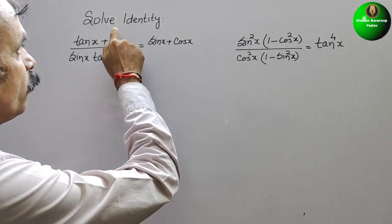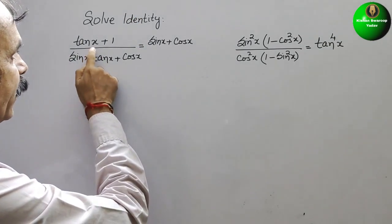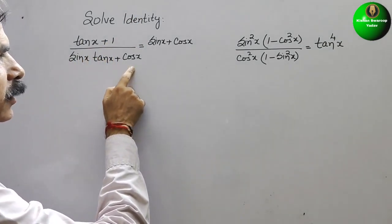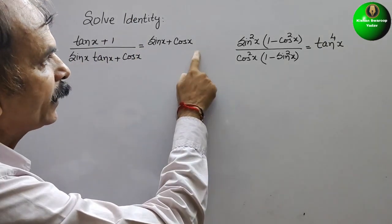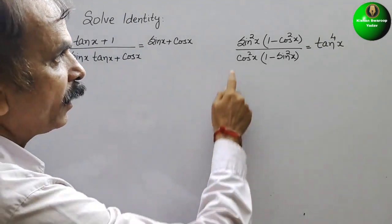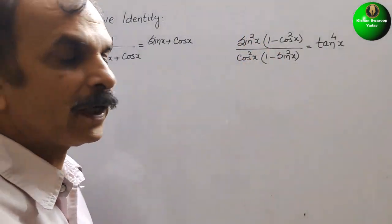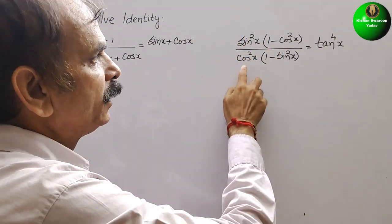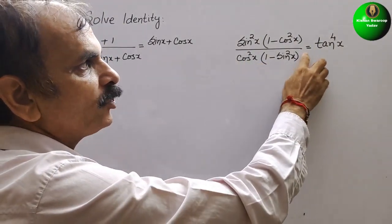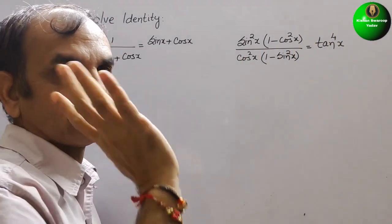The question is to solve identity. They have given: tan x plus 1 divided by sin x tan x plus cos x, that is equal to sin x plus cos x. Second, they have given sin square x in bracket 1 minus cos square x by cos square x in bracket 1 minus sin square x, that is equal to tan to the power of 4x.